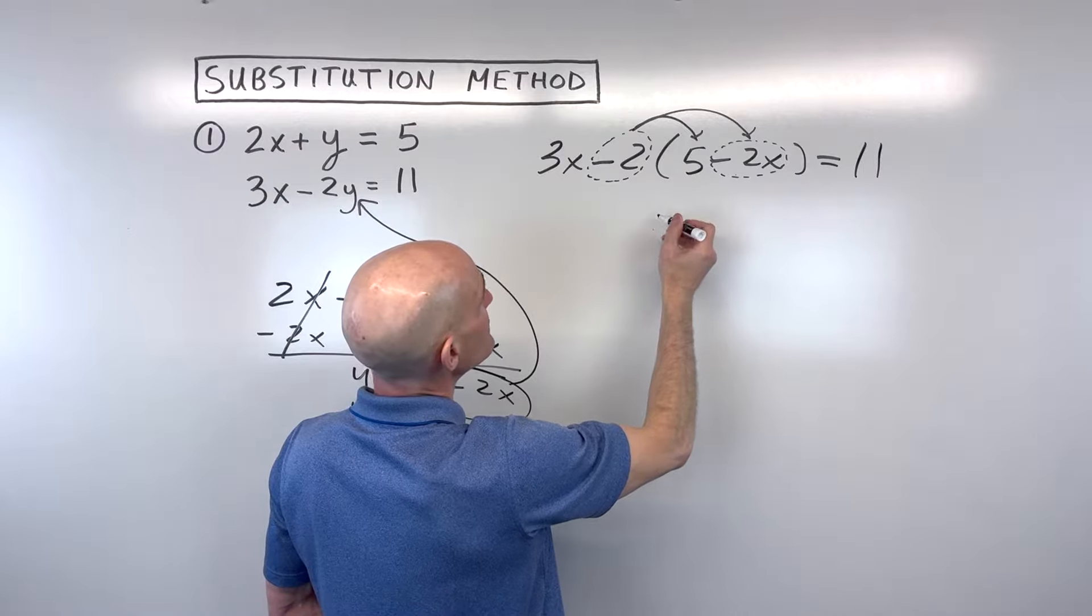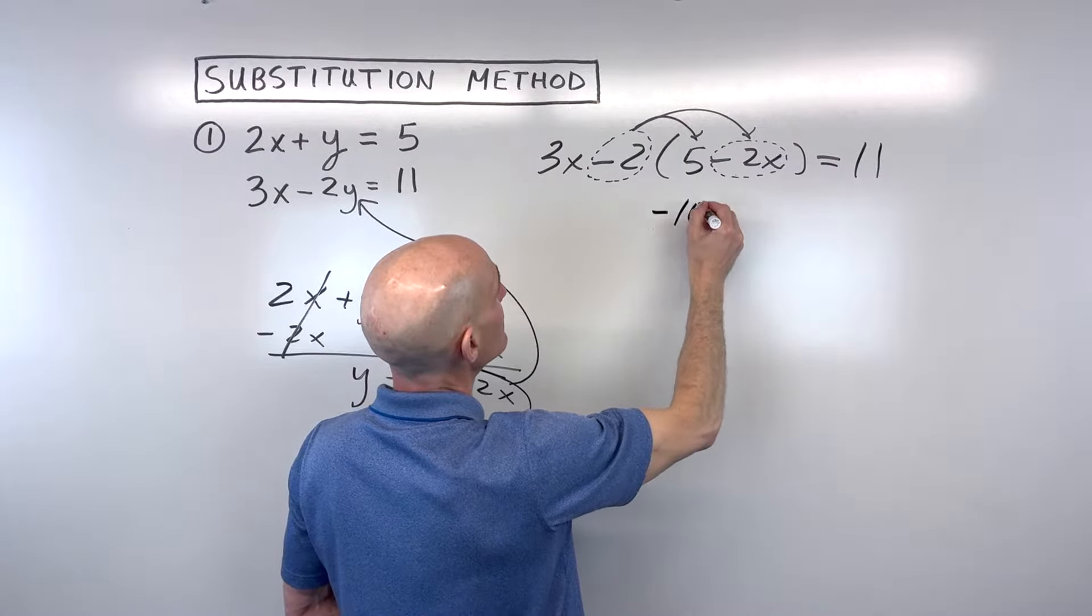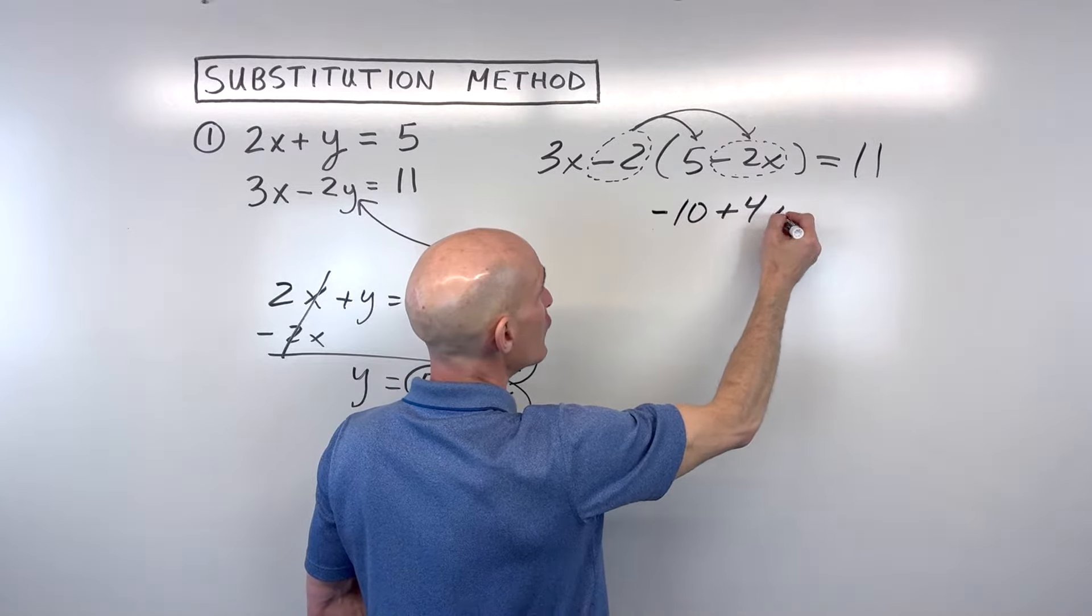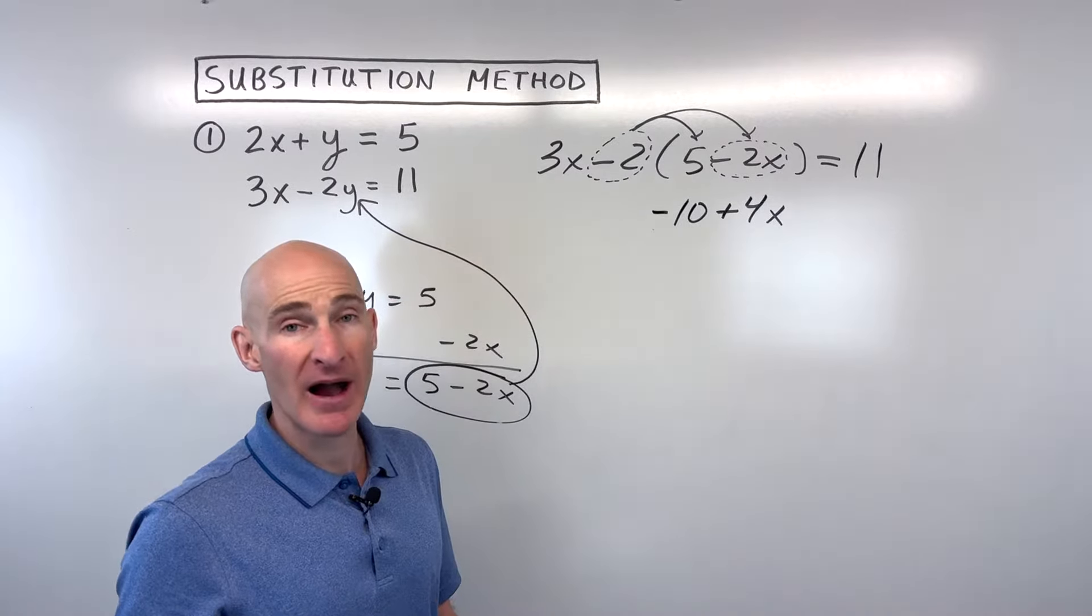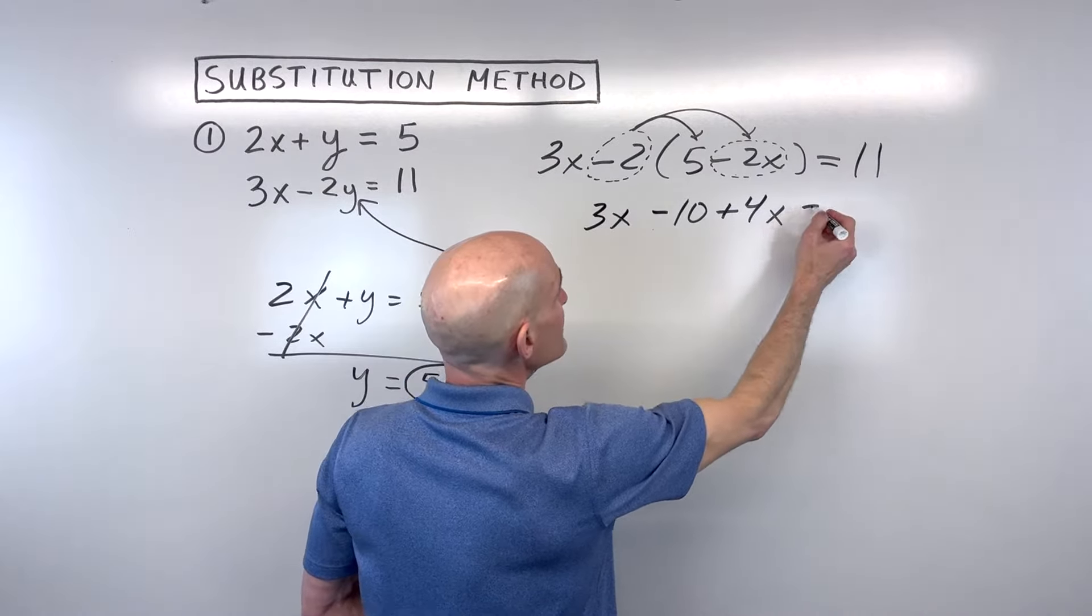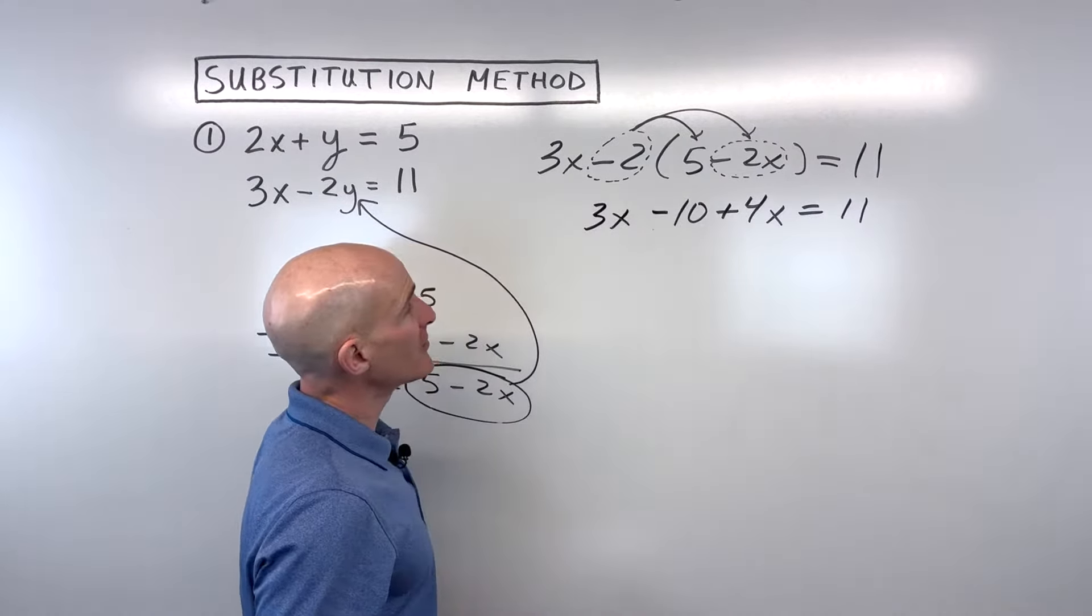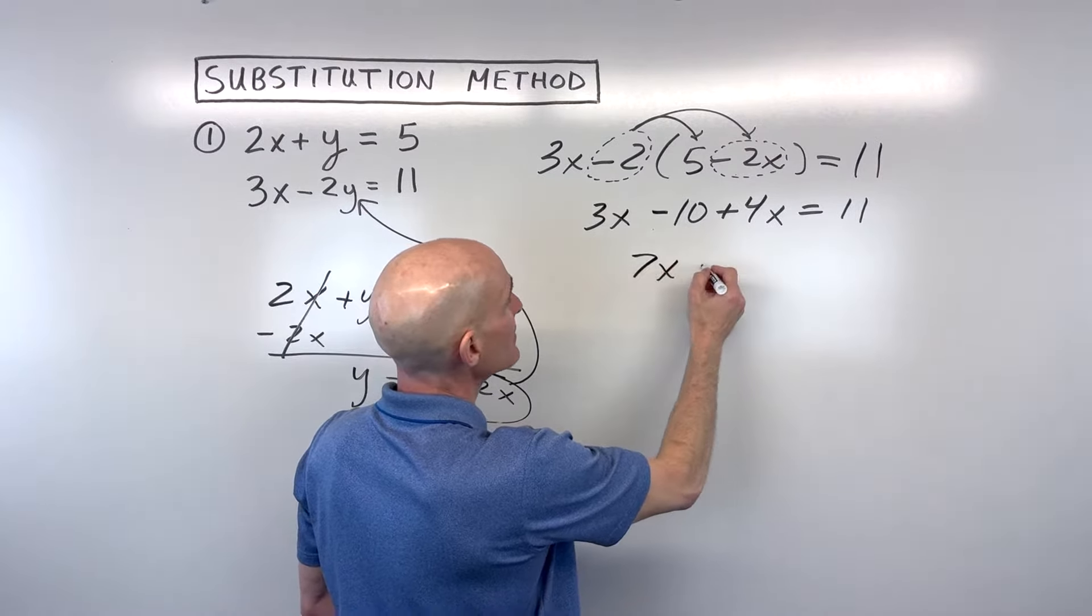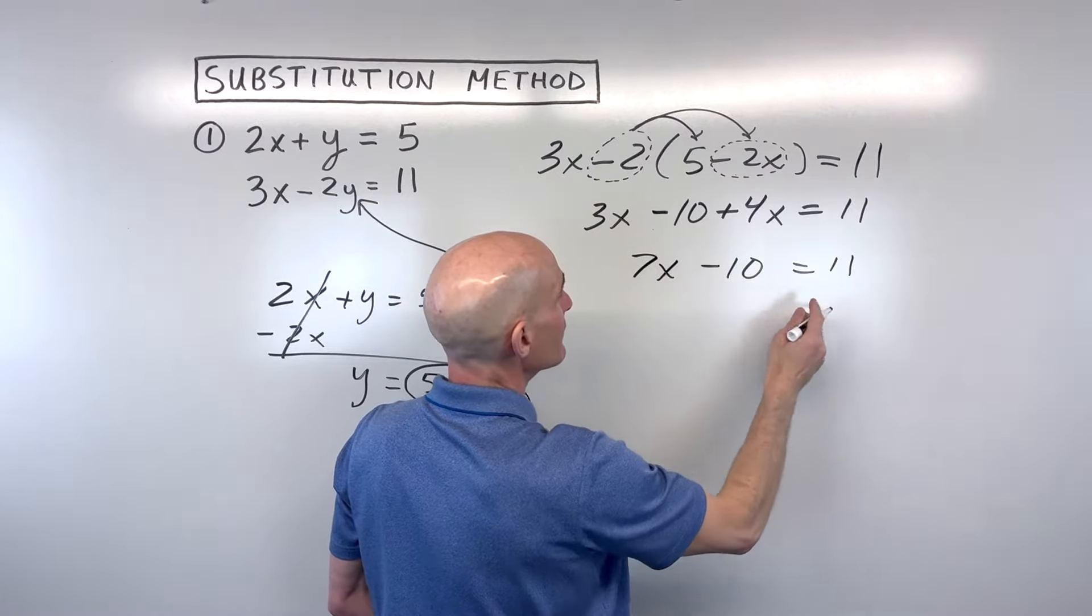We've got negative 2 times 5, which is negative 10. A negative 2 times a negative 2x is a positive 4x. Remember, a negative times a negative is a positive. Let's bring down the 3x, and this equals 11. So now we've done the distributive property. Let's combine like terms.